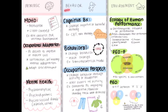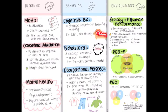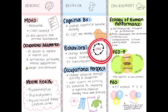Moving on to behavior-based models and theories, we have the cognitive behavioral model. This model focuses on changing or altering negative or harmful thinking. This immediately reminded me of cognitive behavioral therapy or just talk therapy in general, which is why I drew this little therapy couch here. Moving on to the behavioral model — this model really centers around changing behavior through teaching change. This reminded me of the trans-theoretical model, which is the one that talks about pre-contemplation, contemplation, as well as several other stages of change.